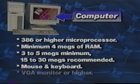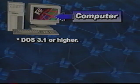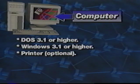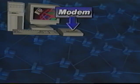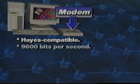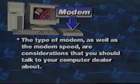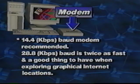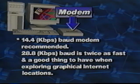You will also need a mouse, a keyboard, and a monitor with VGA or higher capabilities. The system needs to be running DOS 3.1 or higher and Windows 3.1 or higher. A modem allows the computer to translate its data into a signal that can travel over a standard telephone line to talk to another computer. You will need a Hayes-compatible modem that runs at least 9,600 bits per second. The modem can be internal or external. It's recommended to have at least a 14.4 baud modem. A 28.8 baud is twice as fast and a good thing to have when exploring graphic-oriented programs on the Internet.